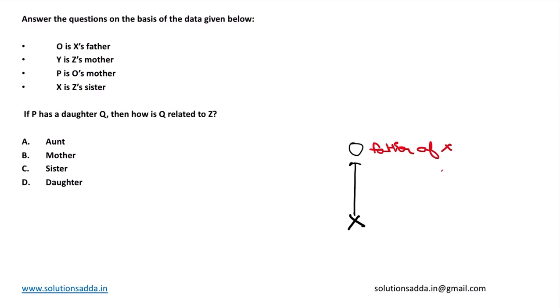Y is Z's mother. Suppose Y and Z are there, so Y is Z's mother. Z is there and Y is there, so Y is mother of Z.